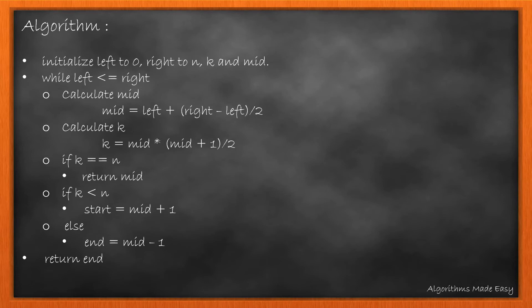For that, we will initialize left to 0, right to n, k and mid. We will loop till left is less than or equal to right and calculate mid and k using the formulas. If the calculated k is equal to n, we return mid. Else, if k is less than n, we set left to mid plus 1. Otherwise, we set right to mid minus 1. At the end, we return right.